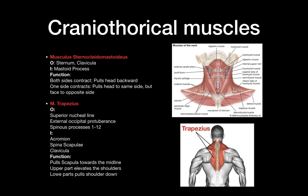Now we'll go to the third group: the cranio-thoracic muscles. There are two muscles — musculus sternocleidomastoideus and musculus trapezius. The sternocleidomastoideus originates from the sternum and the clavicle, and inserts at the mastoid process of the temporal bone. When both sides contract, it pulls the head backwards. When one side contracts, it pulls the head to the same side but turns the face to the opposite side — you can feel this muscle when you look to the right.